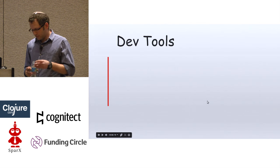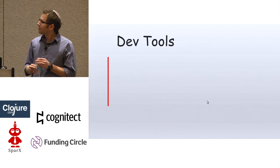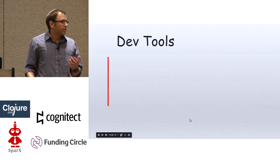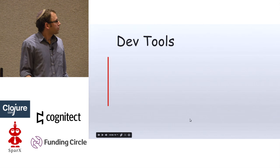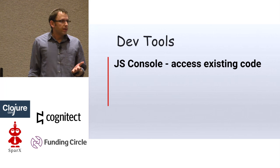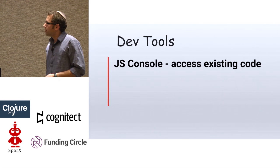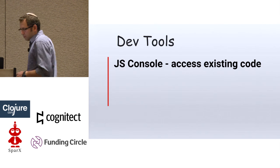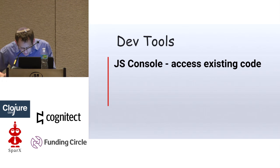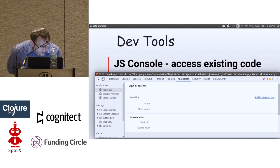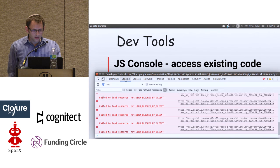The fourth and last topic: dev tools. This is mostly about web development in general, not only ClojureScript. A browser gives the developer many good tools. One of them is the JavaScript console — if you open developer tools with F12, there's a console where you can write and execute code.